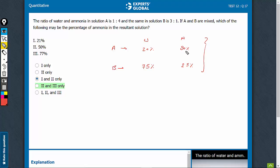So water is going to be between 20 and 75. Ammonia is going to be between 80 and 25. The question is asking the possible percentage of ammonia, so it has to be between 25 and 80.